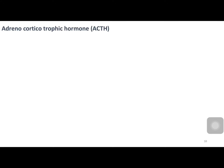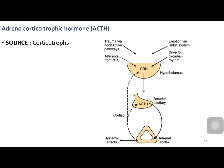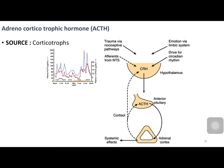The next important hormone released from the anterior pituitary is adrenocorticotrophic hormone, ACTH, released from corticotrophs — it is a polypeptide. The main stimuli for release of ACTH are trauma, stress, afferents from nucleus tractus solitarius, emotional impulses via the limbic system, and circadian rhythm. ACTH secretion follows circadian rhythms — as shown in the graph, it is maximum in the early morning and minimum during evening times.